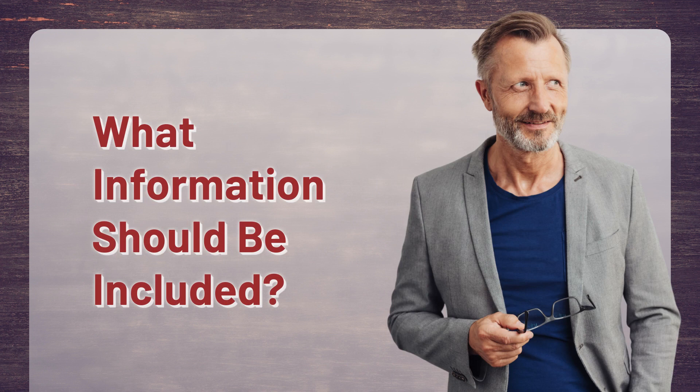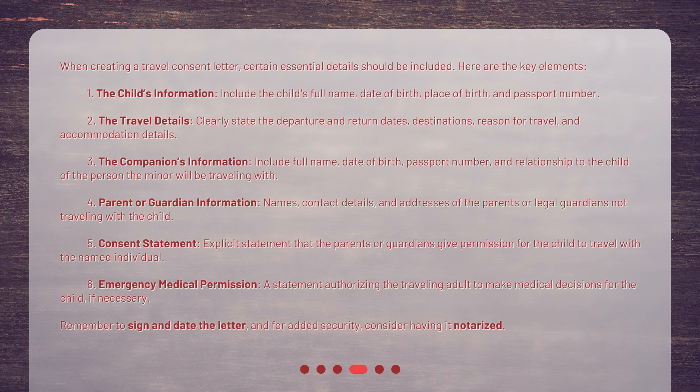What information should be included? When creating a Travel Consent Letter, certain essential details should be included. Here are the key elements. 1. The child's information: include the child's full name, date of birth, place of birth, and passport number. 2. The travel details: clearly state the departure and return dates, destinations, reason for travel, and accommodation details.